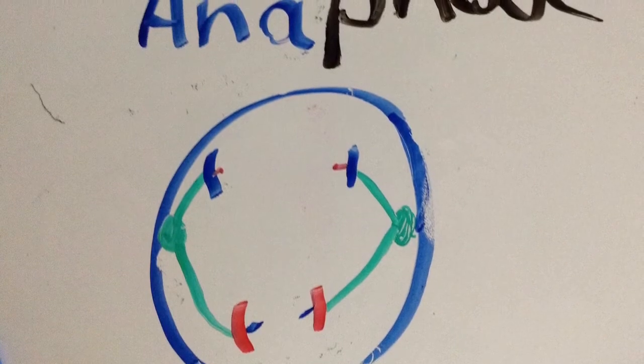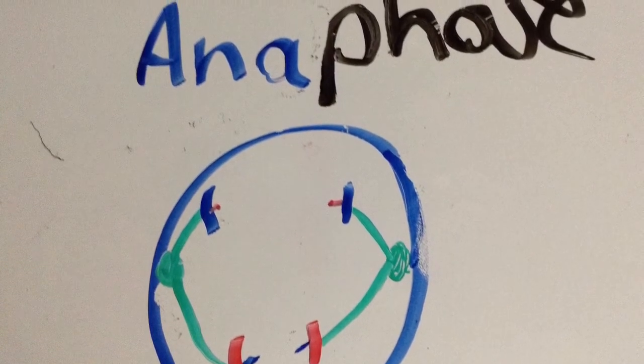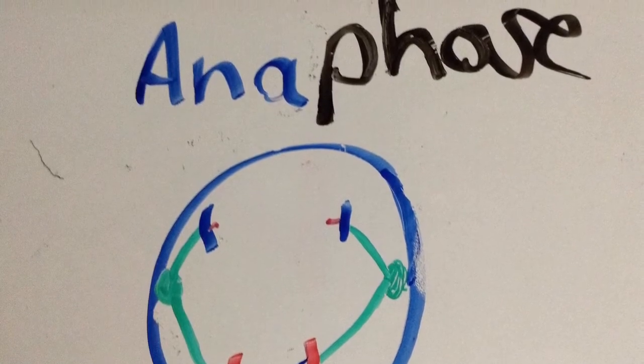We've made it halfway to anaphase, the third to last of the mitosis stages. Here the spindle fibers shorten and the chromosomes divide to become two separate chromatids that will not collide.